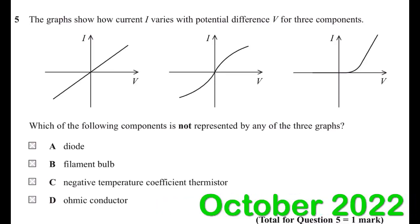This question from October 2022: the graphs show how current varies with the potential difference V for three components. Which of the following components is not represented by any of the three graphs?